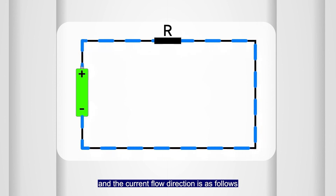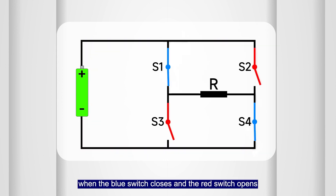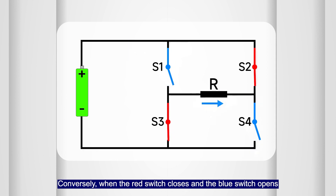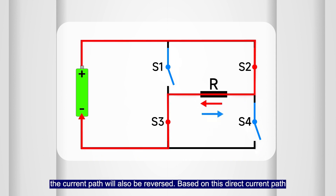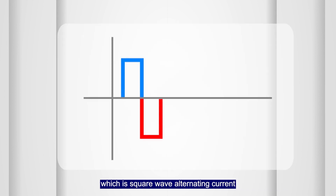With four switches, when the blue switch closes and the red switch opens, the path of the current flowing through the load is as follows. Conversely, when the red switch closes and the blue switch opens, the current path will also be reversed. Based on this direct current switching path, we obtain a square waveform, which is square wave alternating current.